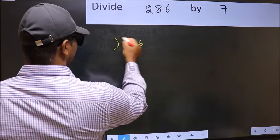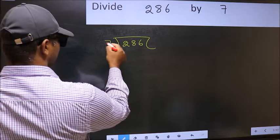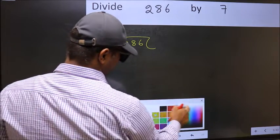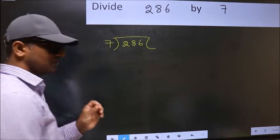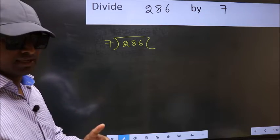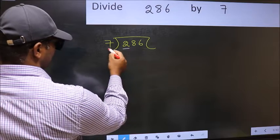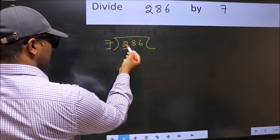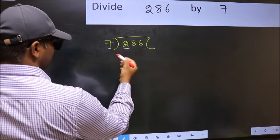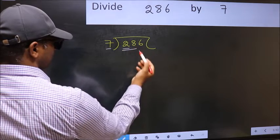286 and 7 here. This is your step 1. Next. Here we have 2 and here 7. 2 is smaller than 7. So we should take 2 numbers, 28.